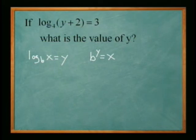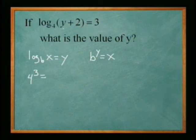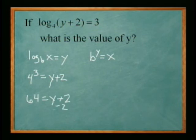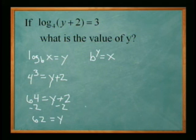So, b is our base, which is 4. Raised to whatever is on the right-hand side — which is 3 — and what was in the x position, we write over here. So we get 4 to the 3rd power equals y + 2. Now, 4 to the 3rd power is 64. I can subtract 2 from both sides, which gives me 62. So y is equal to 62.